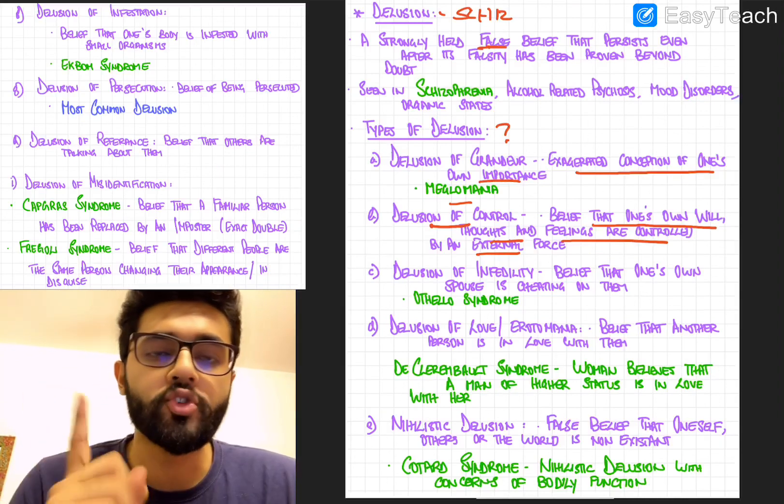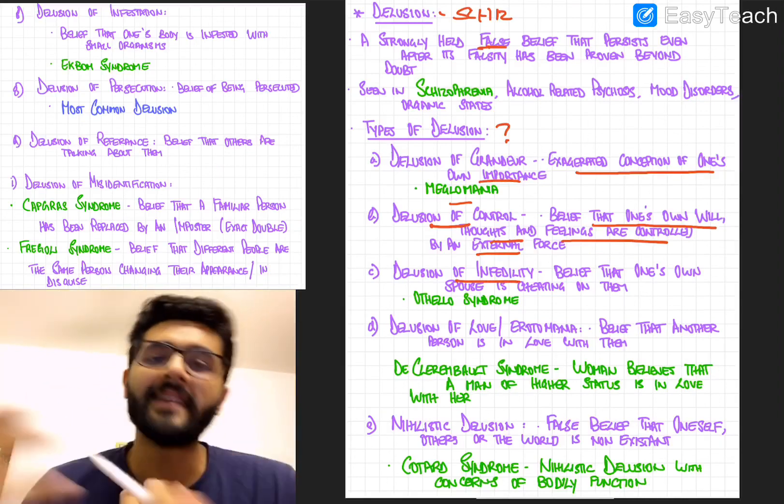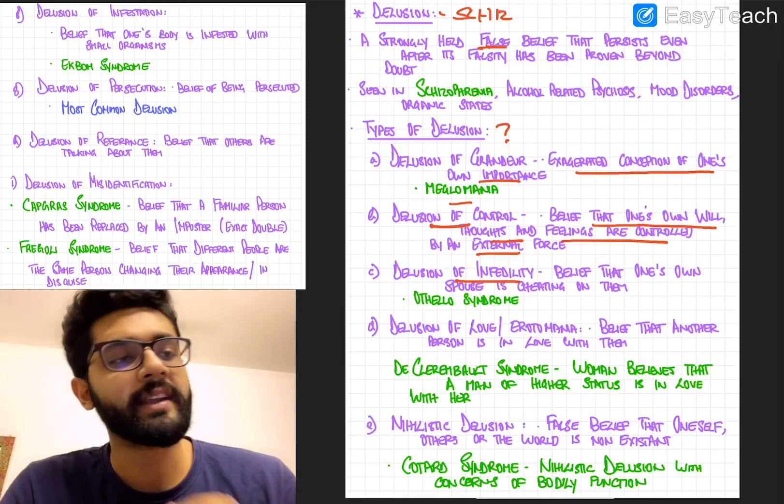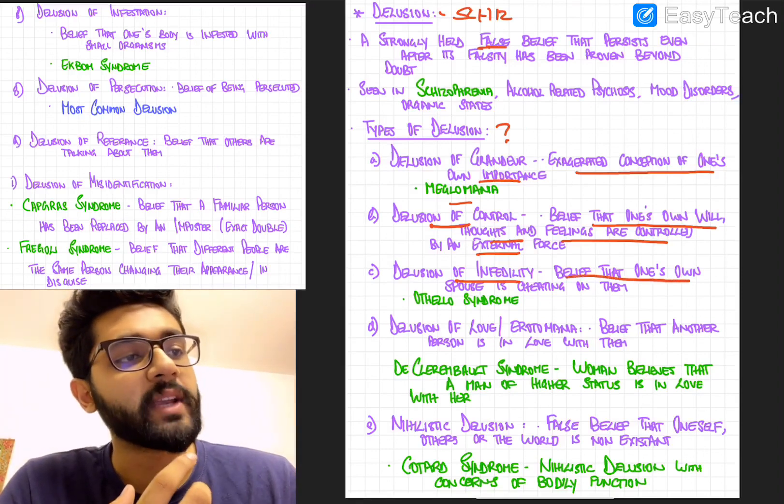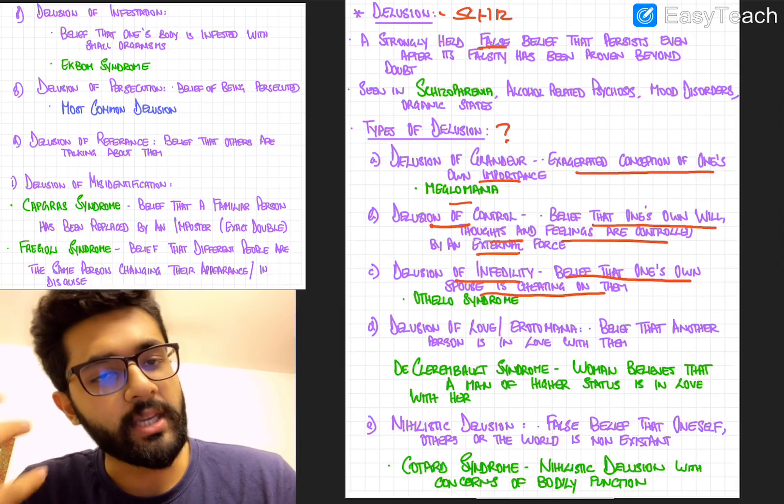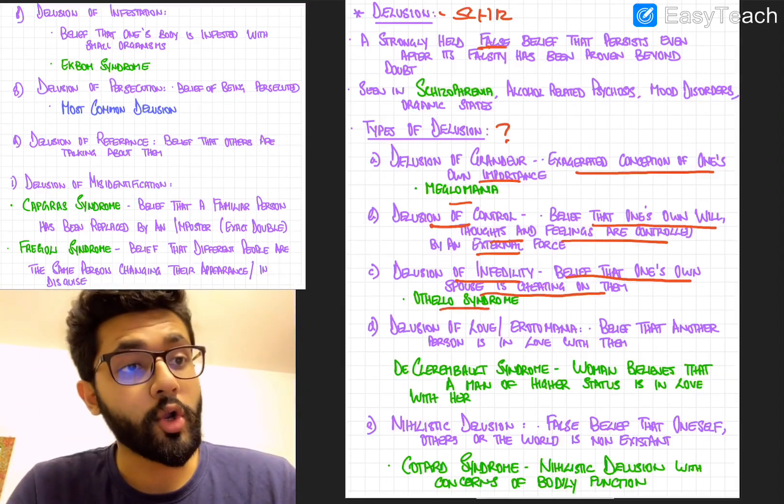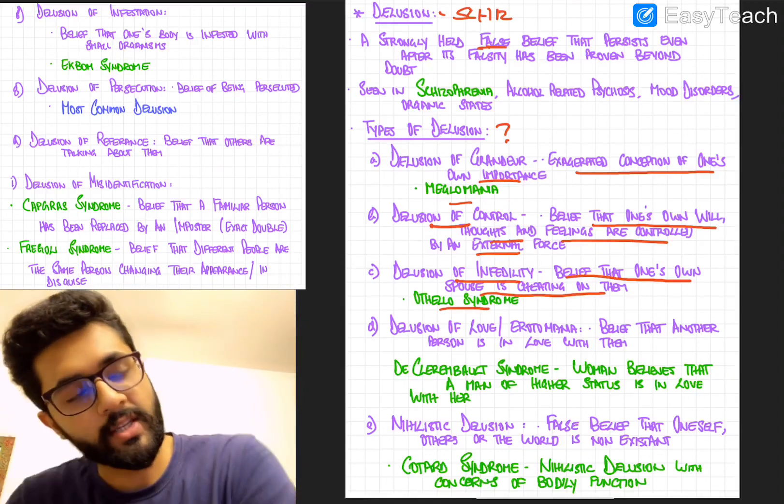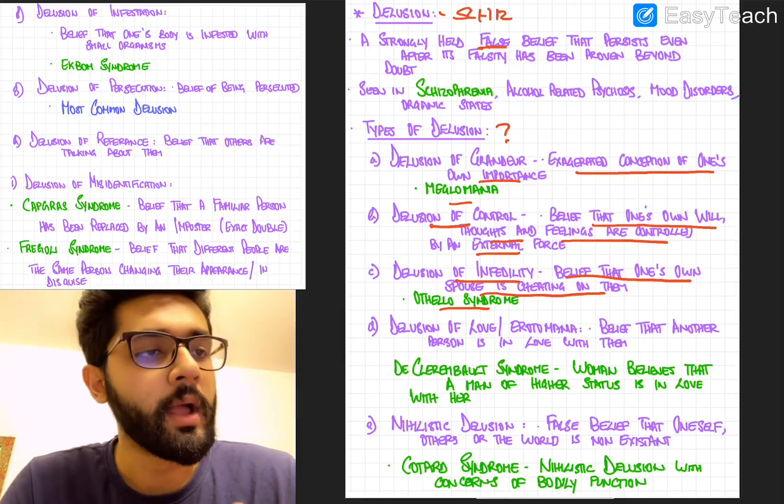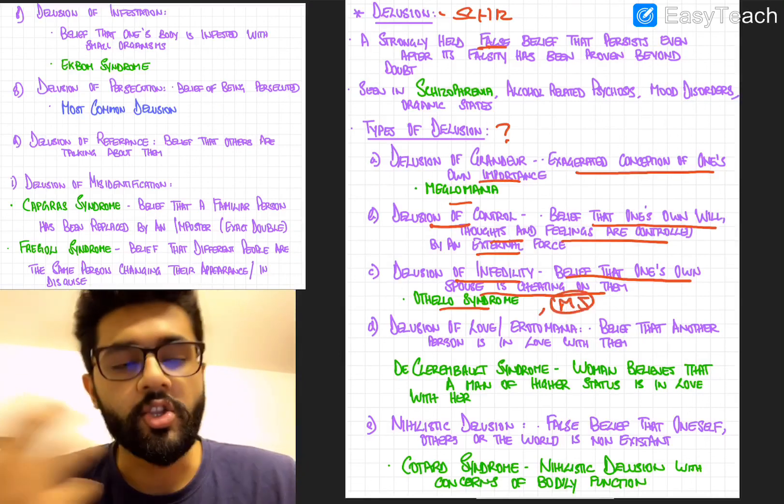Next, you have the delusion of infidelity. So infidelity is nothing but a spouse cheating. So delusion of infidelity is a false belief that one's own spouse is cheating on them. It's also called Othello syndrome, as in the Shakespearean Othello. So Othello syndrome, also sometimes called morbid jealousy.